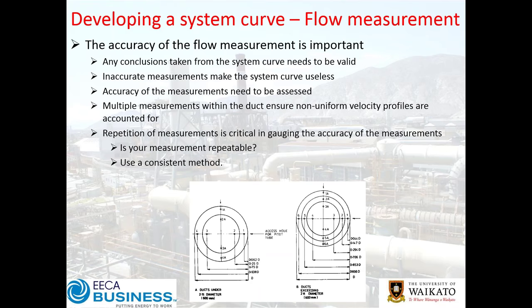Recommended sampling guides exist for different duct shapes — rectangular, square, and circular. Accuracy comes back to repetition, repeatability, and getting a representative measurement of flow across the duct. For smaller ducts you can get away with fewer points; for larger ducts you add multiple points for a better cross section. The main thing to remember is: is your method repeatable? If you go back and do the measurement again, do you get comparable results, or are they all over the place?